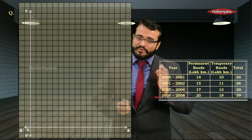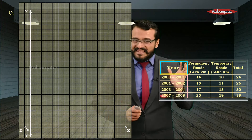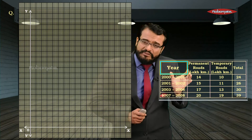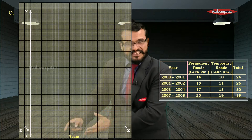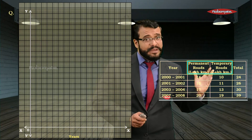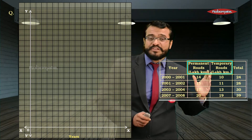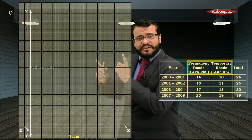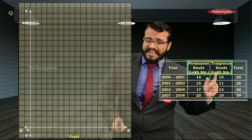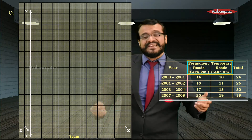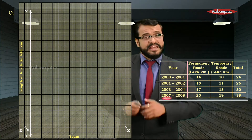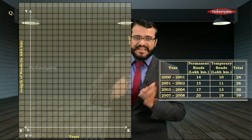Now we have to put information on the axes. Years is subjective information and always goes on the x-axis. Permanent roads and temporary roads are numerical information and always go on the y-axis. So we write 'length of roads in lakh kilometres' on the y-axis.